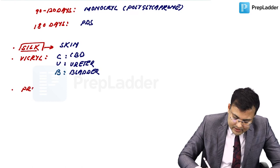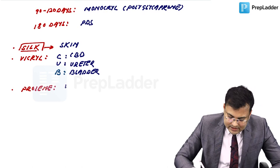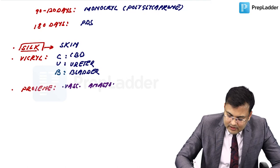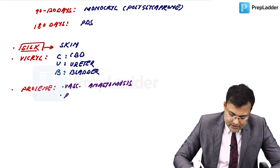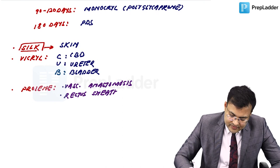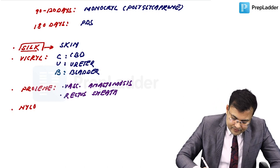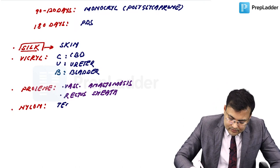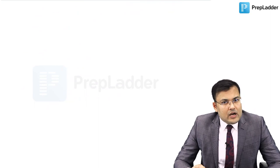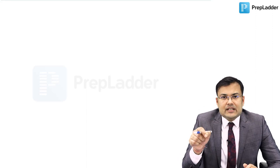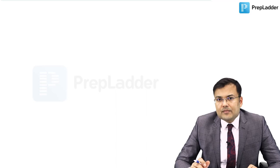Suturing principles are now being asked in AIIMS and NEET. Jenkins rule: the ratio of suture length to wound length should be 4:1. For an elliptical incision to heal without tension, the length-to-width ratio should be 3:1. For skin suturing, the ratio of distance between sutures to skin thickness should be 2:1.